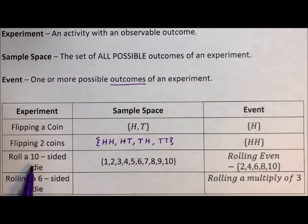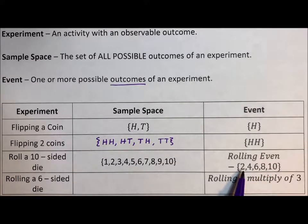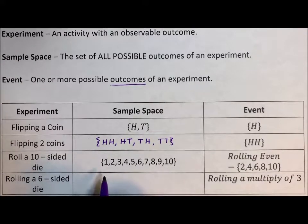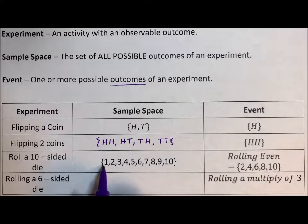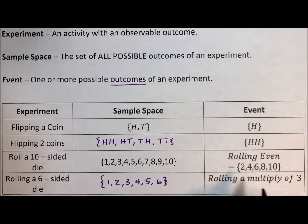If we roll a 10-sided die, our sample space is the outcomes one through ten. We can have rolling an even, so in this case our event is more than one outcome — that's half of the possible outcomes: 2, 4, 6, 8, or 10. So if we wanted the sample space of rolling a six-sided die, we use curly brackets — you can think of curly brackets as a regular bracket with a little beak in the middle. So: {1, 2, 3, 4, 5, 6}. That's our full sample space. And rolling a multiple of three is just three and six.